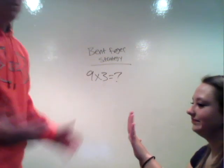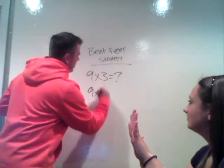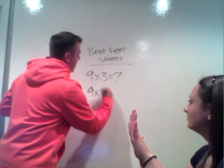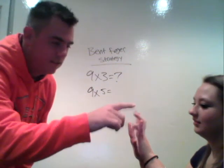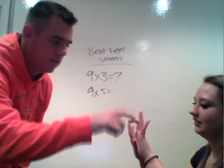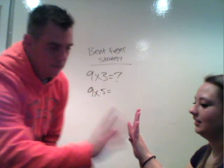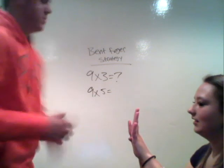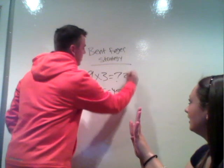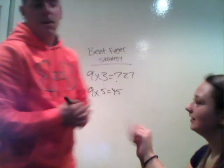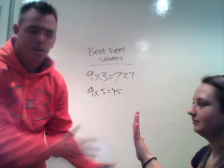We can do it again. We'll do nine times five. We count off five — one, two, three, four, five — so we'll bend that one. We have four and five, so your answer is forty-five. And you can do that for every nine multiplication problem up to ten.